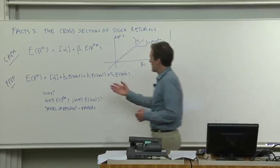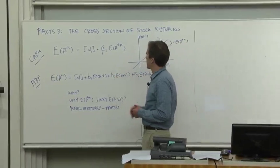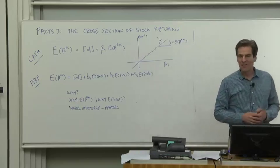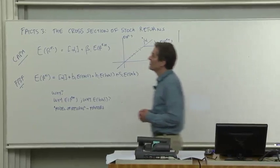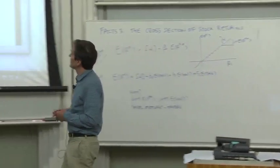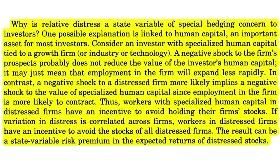Fama and French have a story for that. It's highlighted on page 77. Why is relative distress, HML, a state variable of special hedging concern to investors? A possible explanation is human capital. So they tell a story here that people are worried about their jobs falling apart at the same time as HML falls apart. They're making an economic connection to try to have the economic underpinnings of those models.